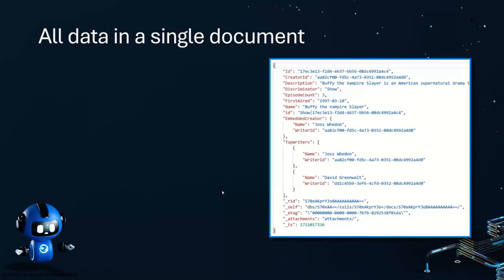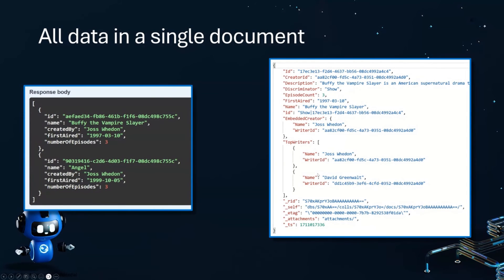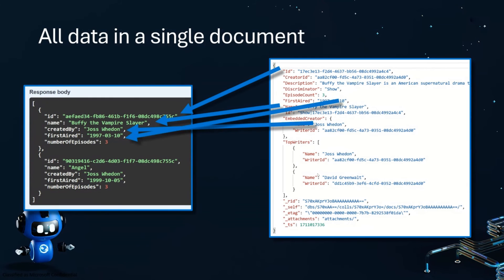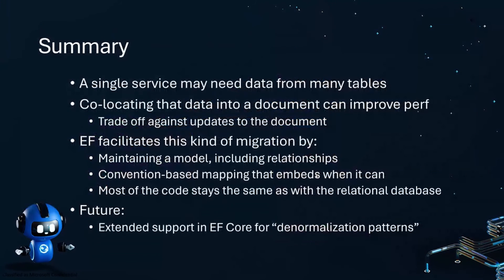So to recap what we did: we created a document with embedded information duplicated from other places so we can efficiently retrieve it. Everything in that response body now comes from a single document, rather than from three different places as it was in the relational model. Co-locating data into a document can be a great way to improve performance, especially when you can trade off slower updates against fast read performance. There are also other ways to handle updates, like change feeds, that we're hoping to look into soon.